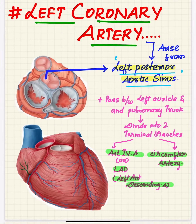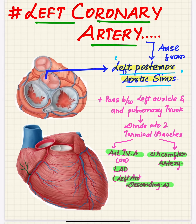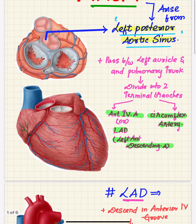Welcome back to the channel. Today I would like to talk about the left coronary artery. The left coronary artery has arisen from the left posterior aortic sinus. Coming to the course of the left coronary artery, it passes between the left auricle and pulmonary trunk.